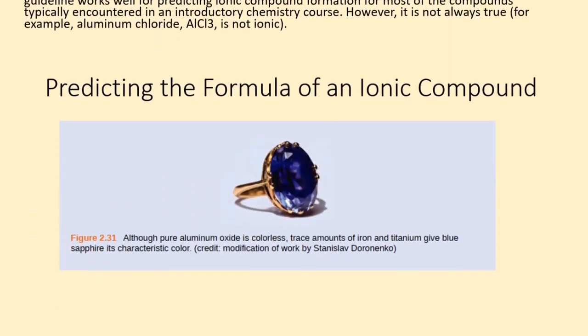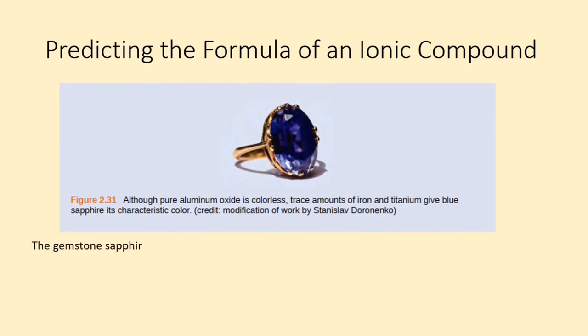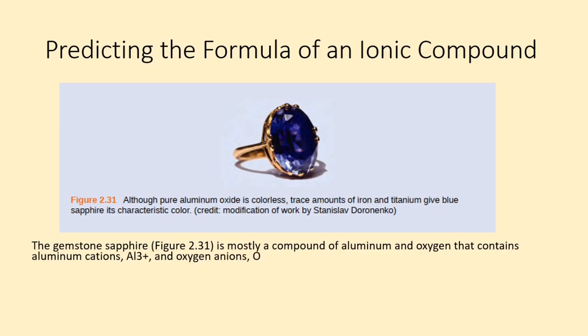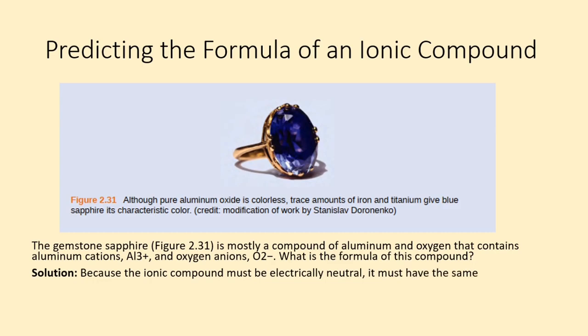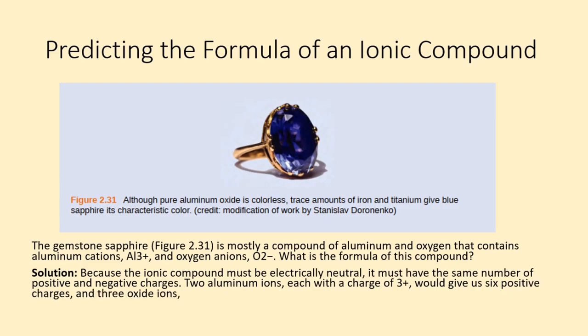Predicting the formula of an ionic compound. The gemstone sapphire is mostly a compound of aluminum and oxygen that contains aluminum cations, Al3+, and oxygen anions, O2-. What is the formula of this compound? Solution: Because the ionic compound must be electrically neutral, it must have the same number of positive and negative charges. Two aluminum ions, each with a charge of 3+, would give us six positive charges, and three oxide ions, each with a charge of 2-, would give us six negative charges. The formula would be Al2O3.